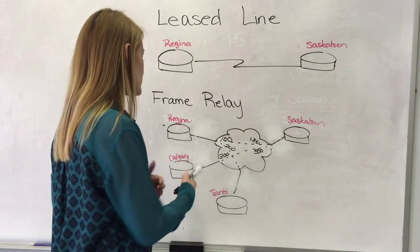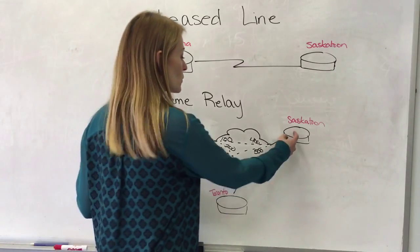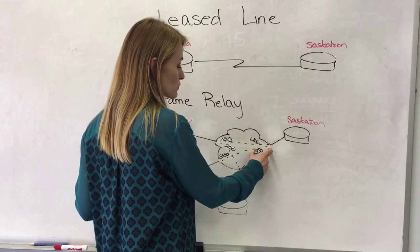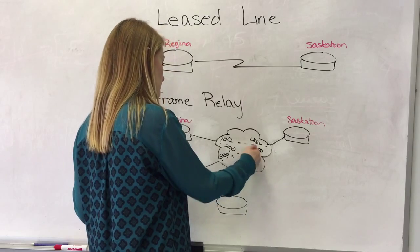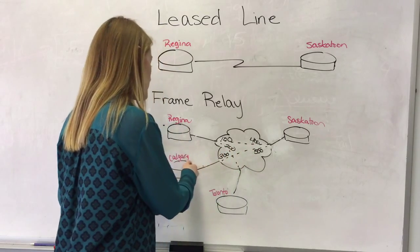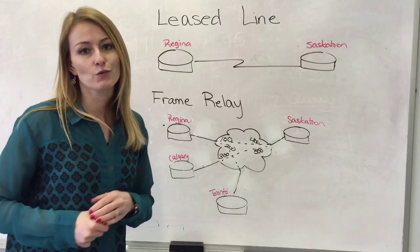If we were going from Saskatoon to Calgary we're going to leave Saskatoon out virtual circuit or DLCI 500 and it's going to travel all the way down here and it's going to come in as DLCI 300.